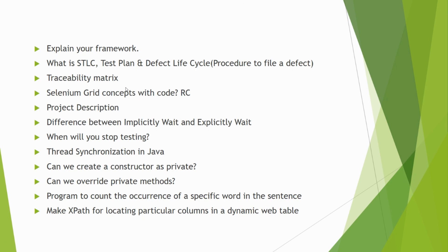Next is Selenium Grid — explain the concept with code. If you haven't used Selenium Grid, just say no — don't try to explain what you don't know. Selenium Grid is basically used when you want to run your application on multiple browsers. In Selenium Grid there is a hub and nodes. The hub establishes connections, and the nodes are where the browsers like Chrome, IE, Firefox, and Opera are configured.